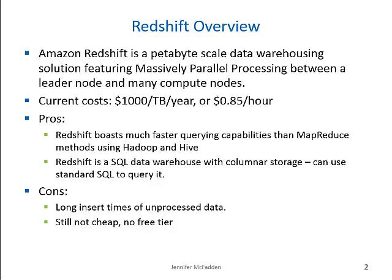The downside of Redshift is that loading data can be slow. Amazon recommends organizing data first with Elastic MapReduce and then moving it into Redshift using their internal data pipeline. While it's a bargain for what you're getting, it's still not cheap. You would need to make sure you're doing enough big data queries to justify importing all your data into another format to run queries.